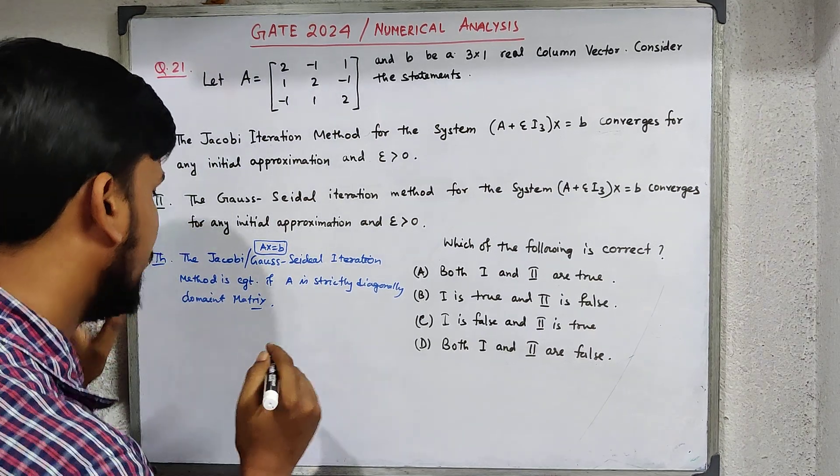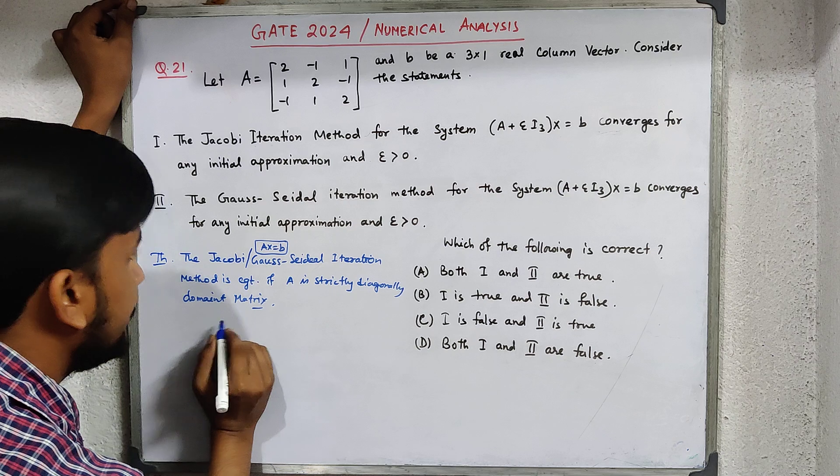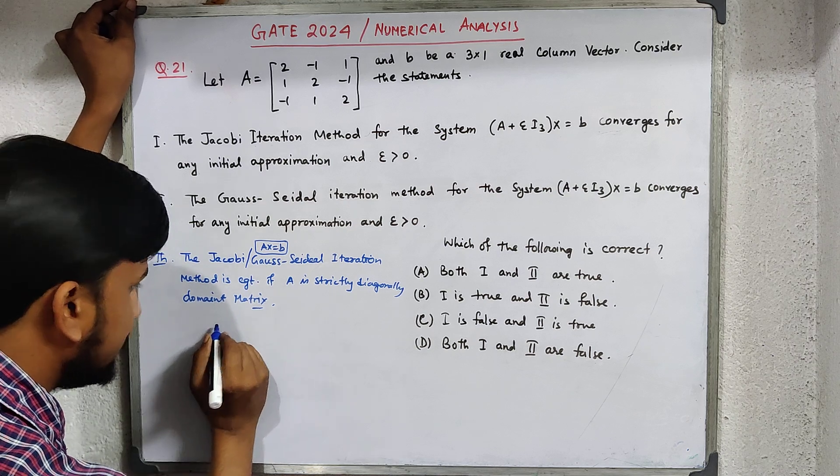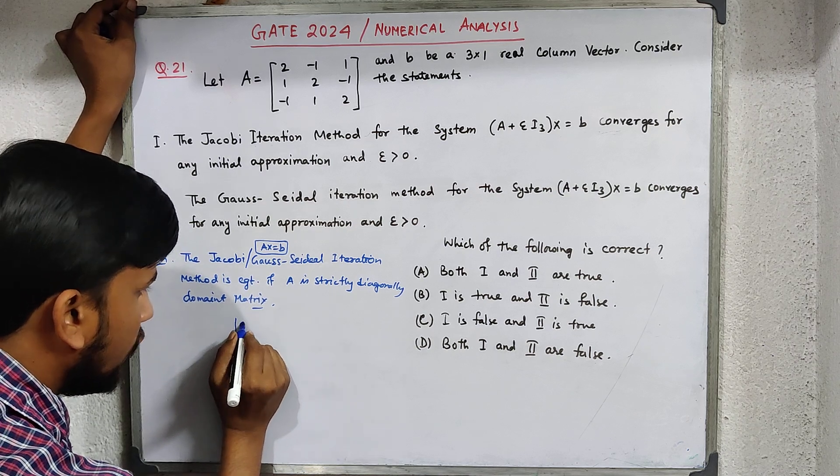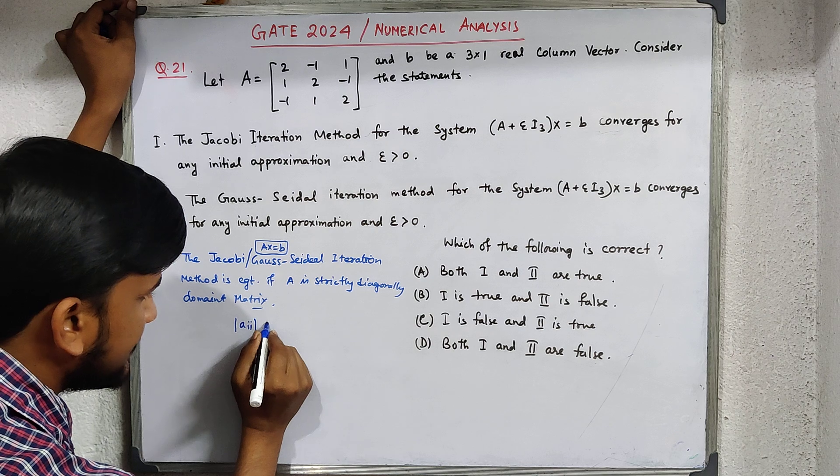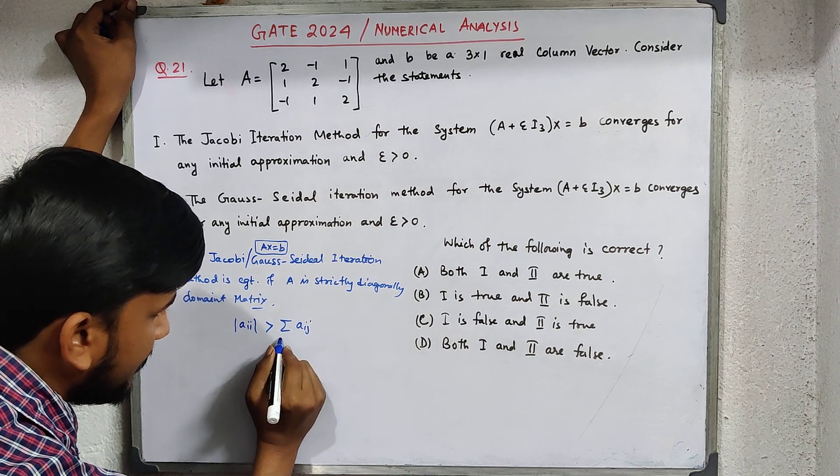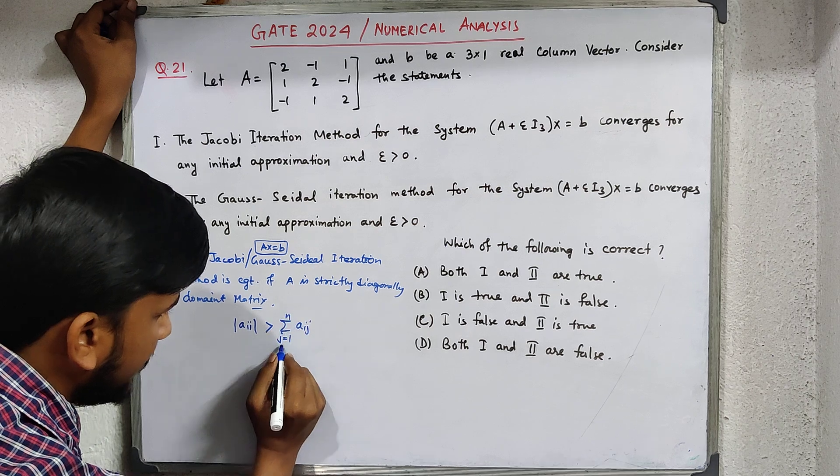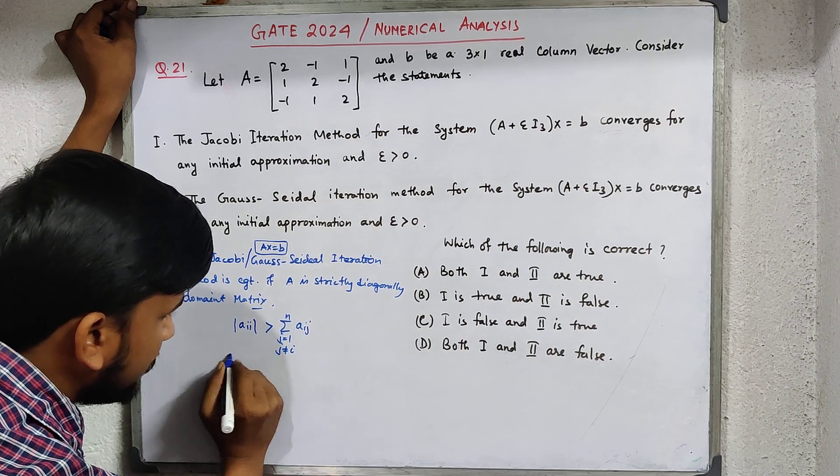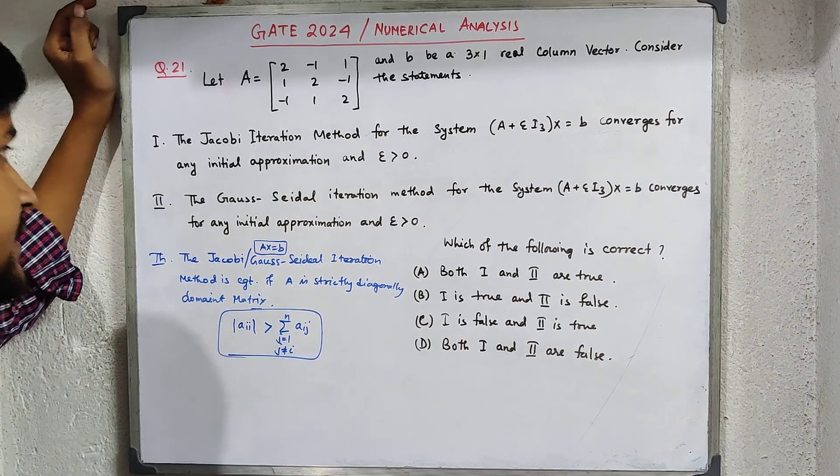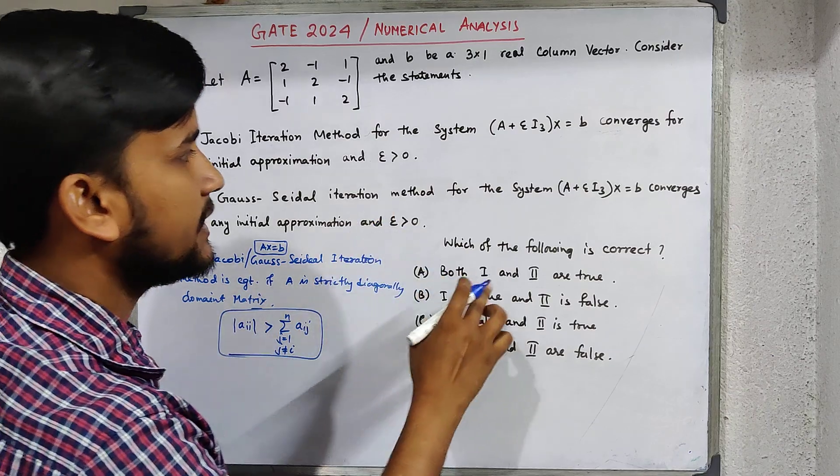I made a video on strictly diagonally-dominant or diagonally-dominant matrices. The definition: if A is a matrix, then diagonally-dominant means |aᵢᵢ| is strictly greater than Σ|aᵢⱼ| for j=1 to n, j≠i. We only have to check this condition.